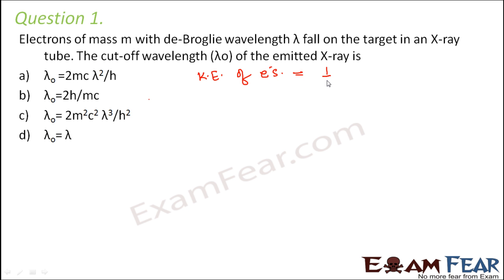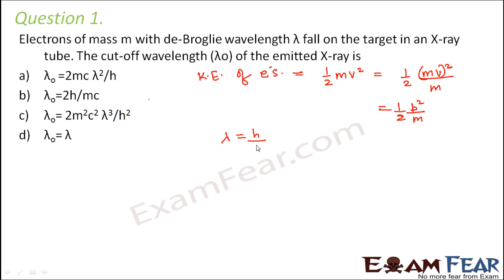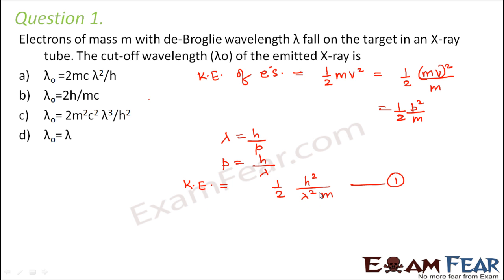The kinetic energy of the electrons is equal to half m v squared, which can also be written as half p squared by m, where p is the linear momentum. From De Broglie hypothesis, lambda equals h by p, so p equals h by lambda. Therefore kinetic energy in terms of lambda is equal to h squared divided by 2 lambda squared m. This is equation 1.